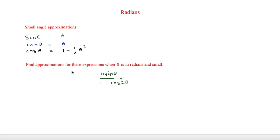This question asks us to find an approximation for the expression θ sin θ over (1 minus cos 2θ), where θ is small and in radians. Looking at the numerator: θ stays the same, and using the small angle approximation for sin θ, it becomes θ times θ, giving θ squared.